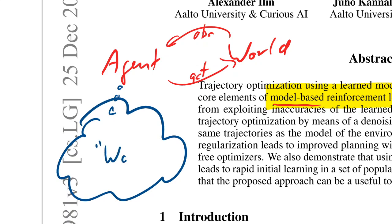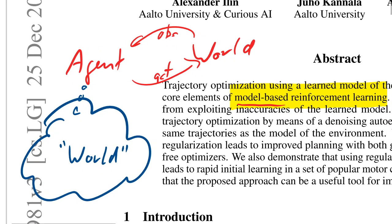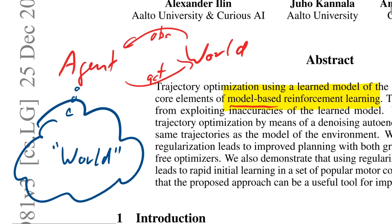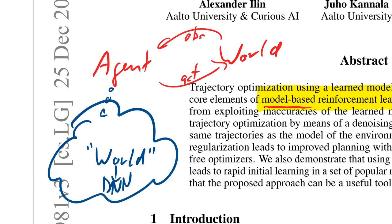Situations where you have an accurate model of the world include things like chess — the rules are very clear, you know how the world will behave if you perform a certain action. But in real-world applications it's very hard to actually make a model, so people usually rely on learned models: a neural network trained to predict how the world is going to act.